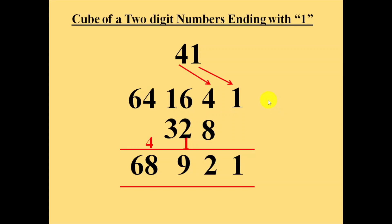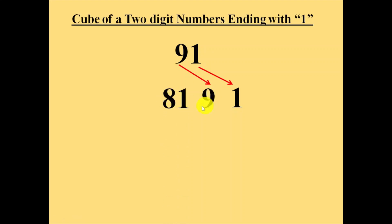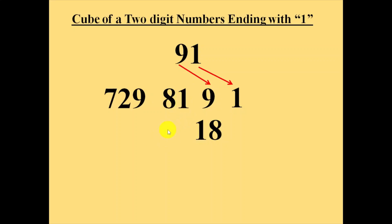Now let's take an example of a bigger number which will have more digits. Let's take the cube of number 91. As usual, we will carry these numbers to the right side: 9 and 1. Then we will make the square of 9 and note down here: 81. Then we will make the cube of 9 and note down here: 729. Then move to the next line — multiply 9 with 2, noting down 18, and multiply 81 with 2, noting down 162.